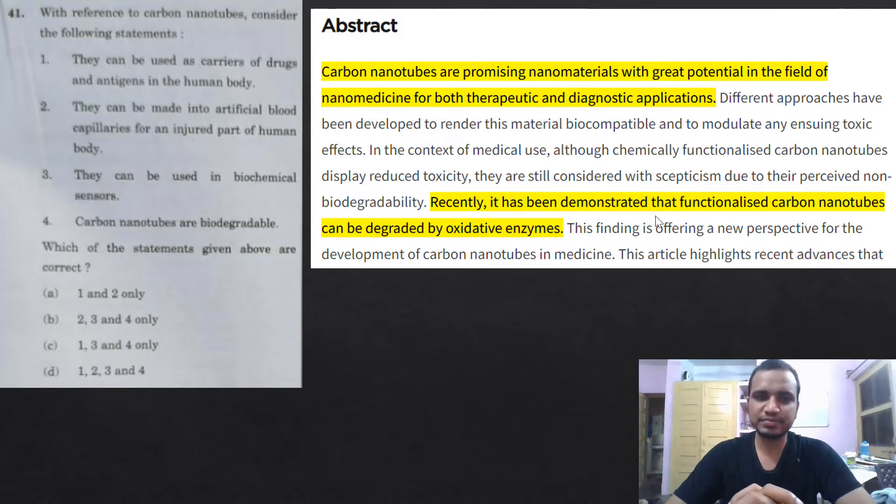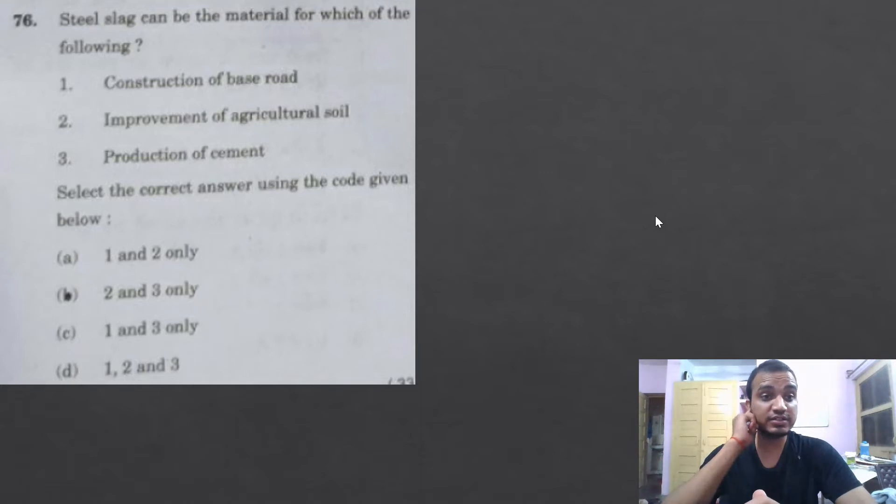Okay, next. It is related to steel making. So note, it is asking about the byproduct which is regenerate in the case of steel making. Steel slag can be the material for which of the following purposes? Like, can it be used for improvement of base road? Can it be used for improvement of agricultural soil? Production of cement? So guys, I think you know this - option three, production of cement, it is done.